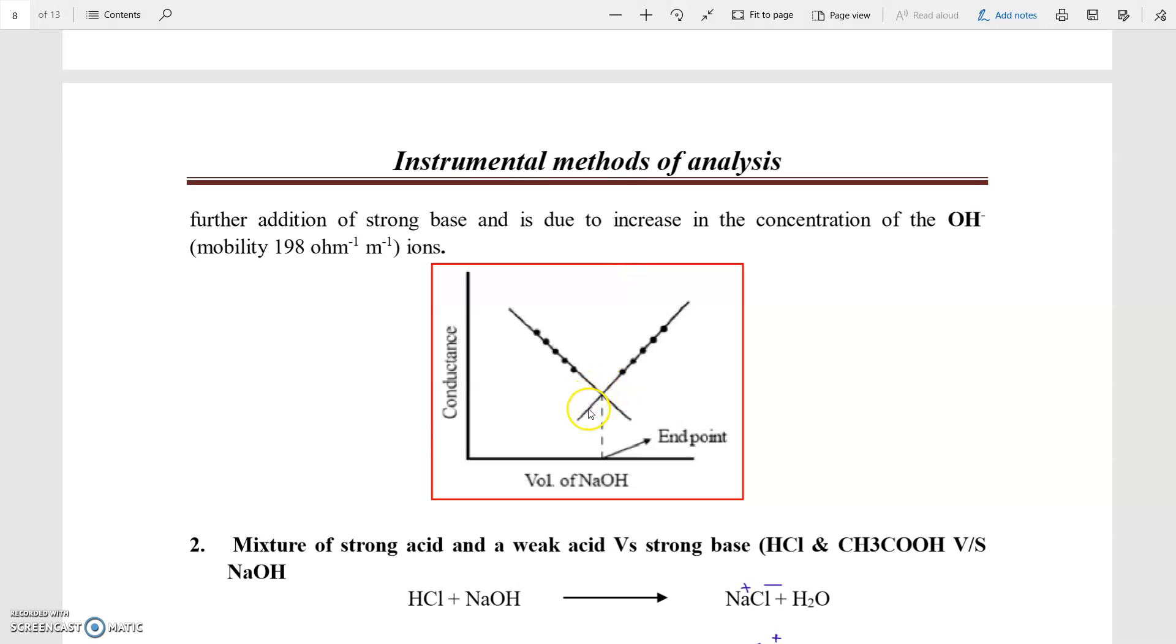whatever the NaOH we are going to add, it will remain hazardous. So that, whatever the NaOH is going to added now, it will exist in the form of Na plus and OH minus ion. The OH minus ion mobility is 198 per ohm per meter. Because of that, we are going to observe that there is a sudden increase in the conductivity.